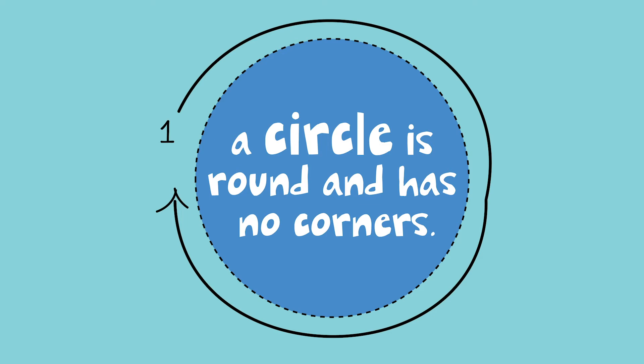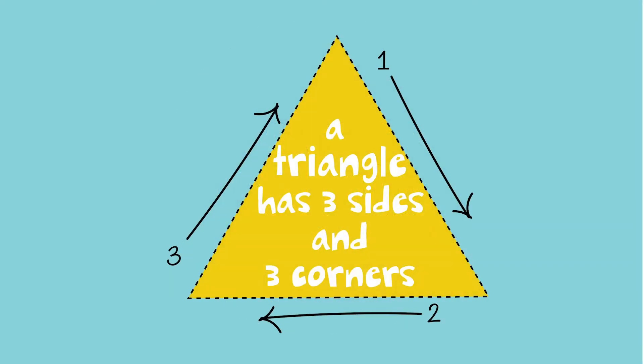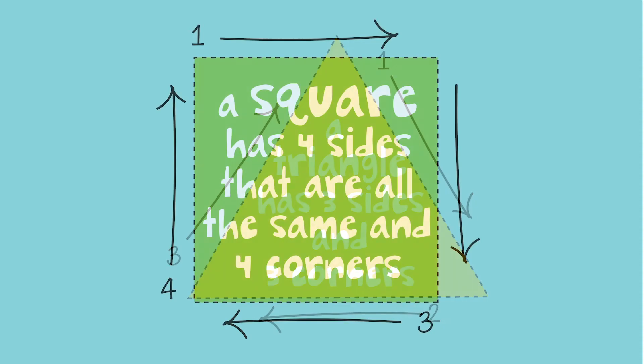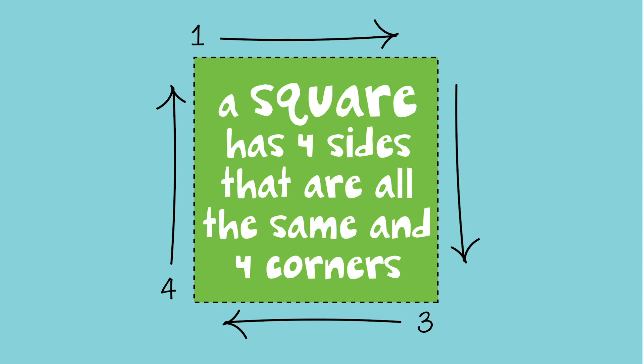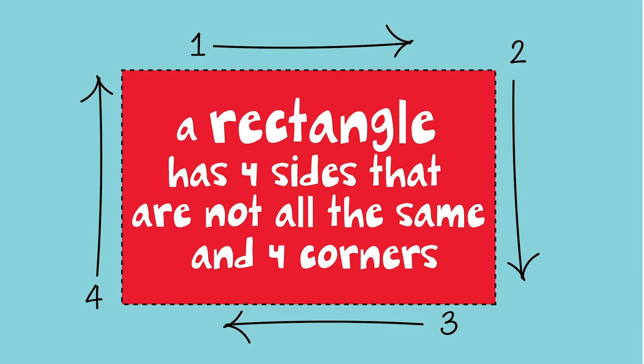A circle is a round shape and it has no corners at all. A triangle has three sides and three corners. A square has four sides that are exactly the same and four corners. And finally, a rectangle has four sides that are not all the same — they're different lengths — but they have four corners.